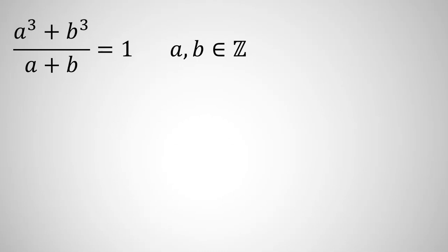A and B are integers and A cubed plus B cubed all over A plus B equals 1. We want to find all possible values of A and B.